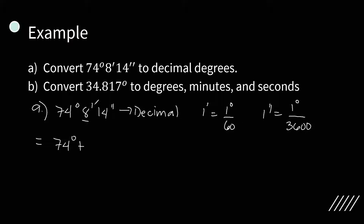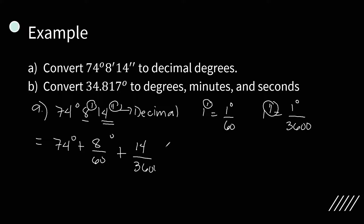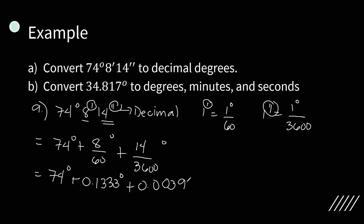So we have 74 degrees plus, converting 8 minutes: 8 times 1 is 8 over 60 degrees. Now this 14 seconds: 14 times 1 is 14 over 3600, and the unit is degrees. Now we have 74 degrees plus, divide 8 by 60, that is 0.1333 degrees, plus divide 14 by 3600, so this is equal to 0.0039 degrees.